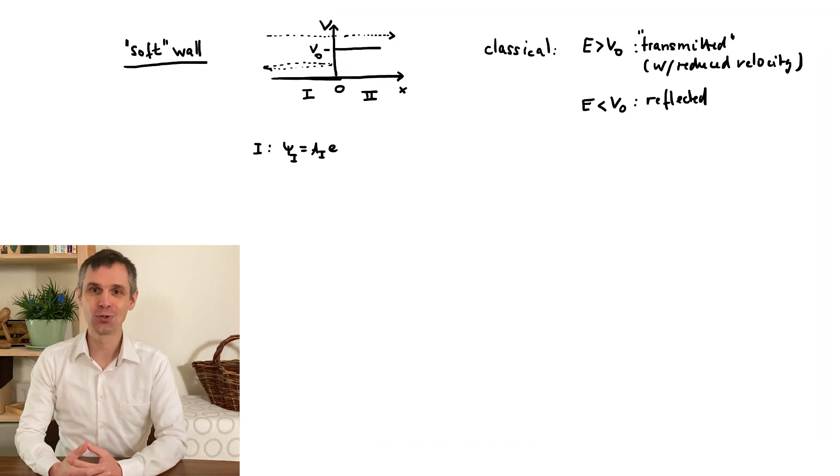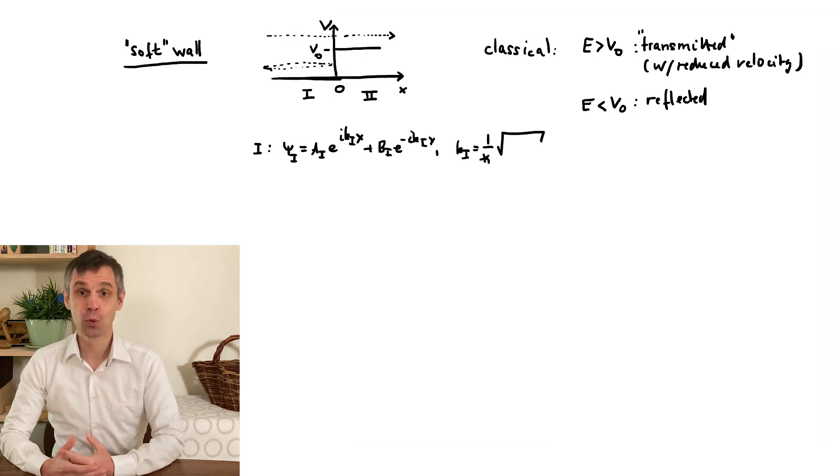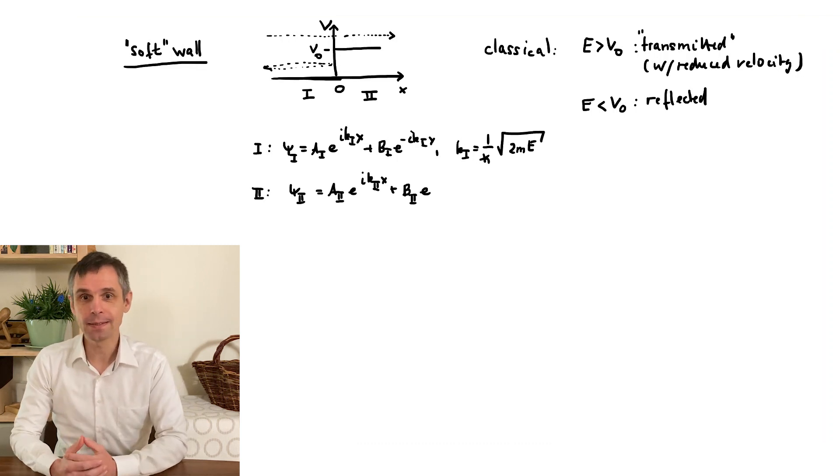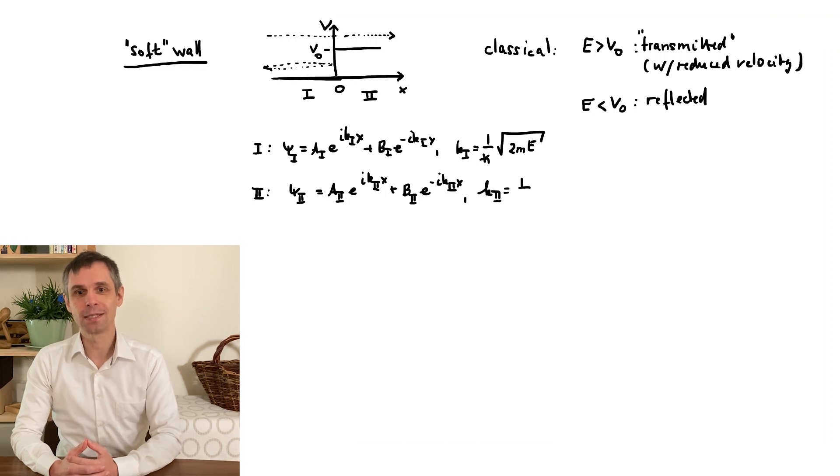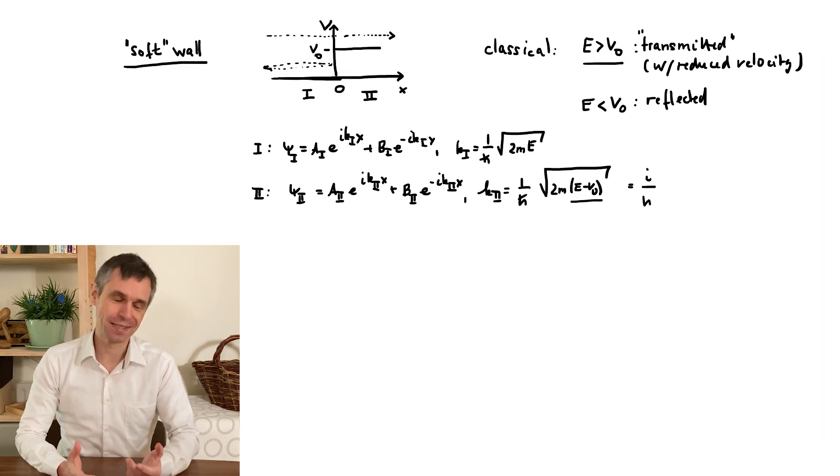Quantum mechanically, our solutions in both regions are still the pairs of counter-propagating plane waves, with the corresponding expressions for the wave numbers. The way it is written here is convenient when the energy is large enough so that the classical particle is always transmitted. In the other case, we change our notation as indicated before.